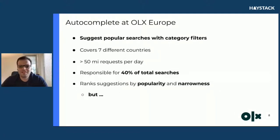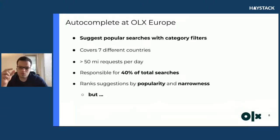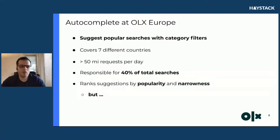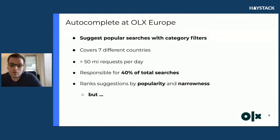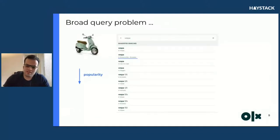How does the autocomplete work at OLX — our use case? We suggest popular search queries with categories. We have a popularity recipe, similar to what was shown in other talks today. We not only suggest popular queries, but also a category filter, so if a user picks a category suggestion they go to a search page with that category filter. We receive more than 50 million requests per day. We cover 40% of total search, and it ranks by popularity and narrowness — if there's a chance to push a more precise category, we do it.